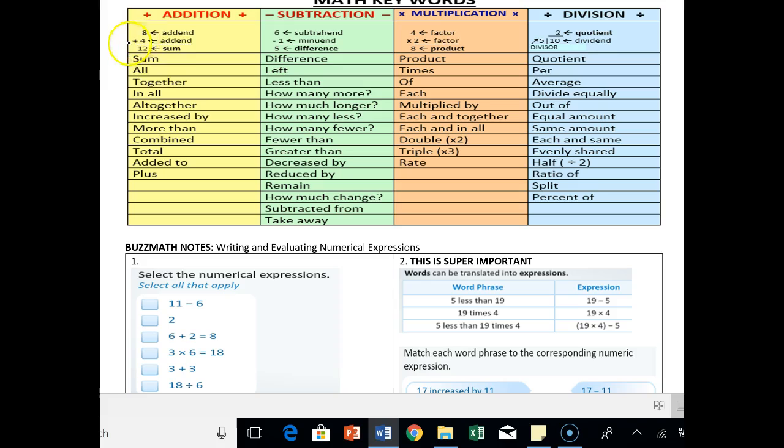So the answer to an addition problem is a sum. Subtraction is a difference. The answer to a multiplication problem is called the product. The answer to division is called the quotient. So let's go ahead first.